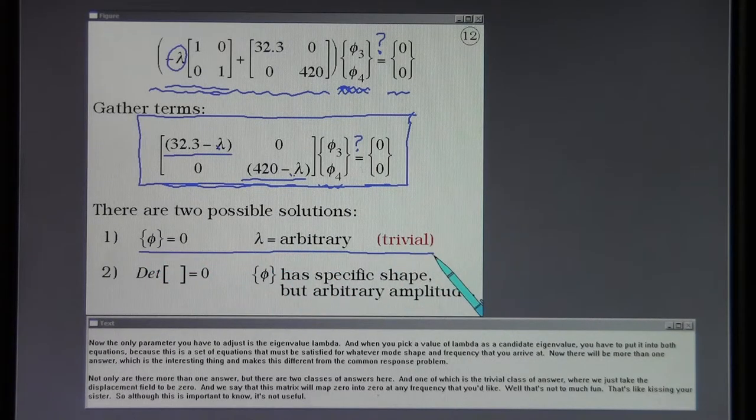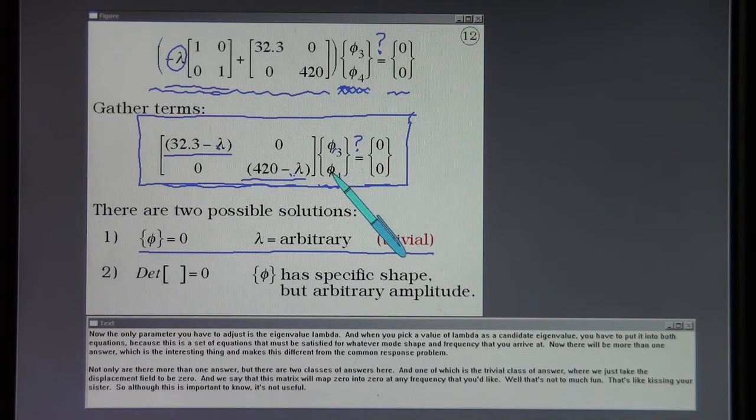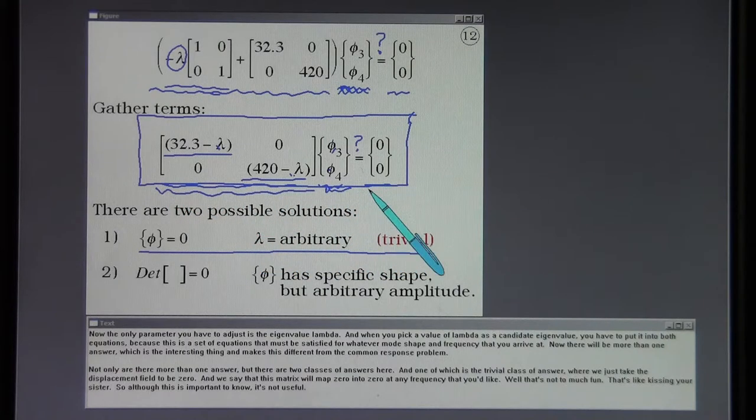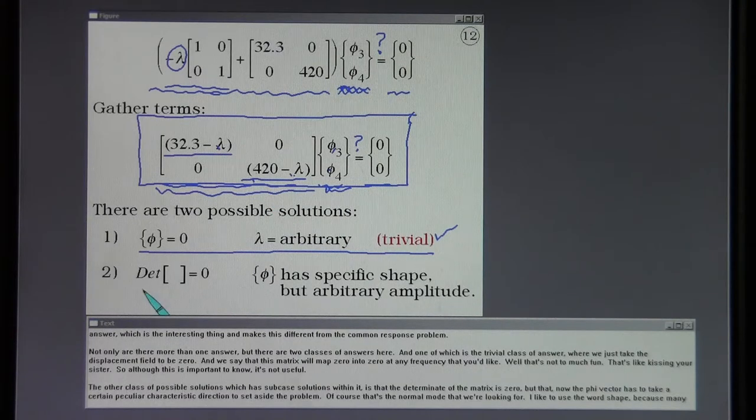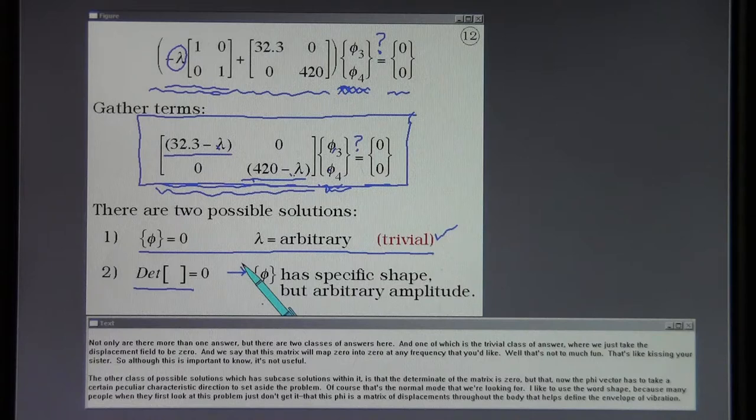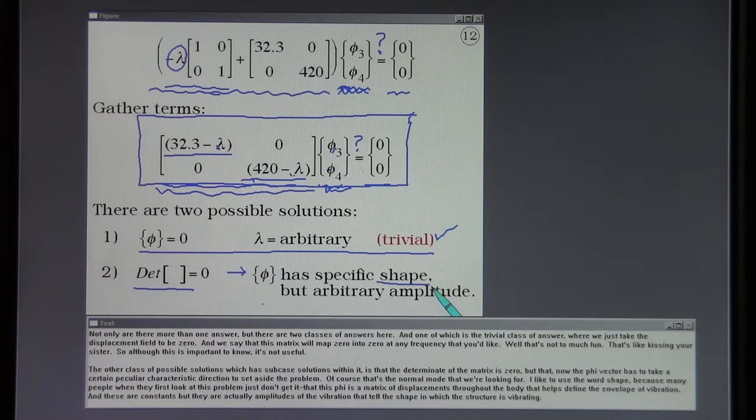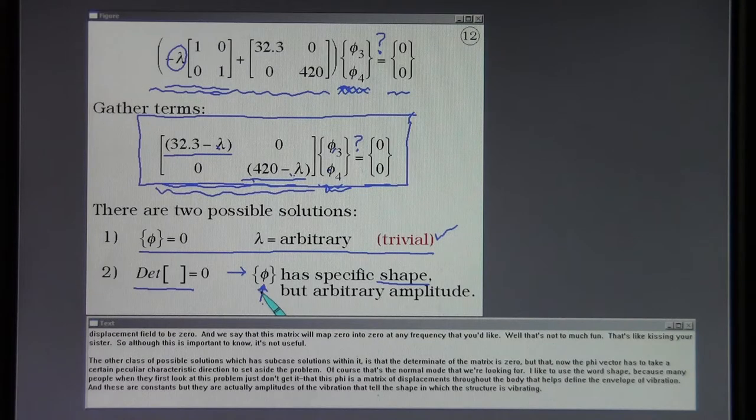The frequency content is involved in this eigenvalue. The displacement field that's proposed is here. This would correspond to the static values that define the envelope of the normal mode. The real question is whether you can bring this system into balance or not. And so we have that second form of the problem where we emphasize that there was a dynamical matrix attempting to map a proposed vector into the zero vector. Now we can put the terms together because matrix addition can be handled this way and see that on the main diagonals there are terms that have both inertia and structural stiffness properties in them. Again we're still asking is there a direction here that can be mapped into zero. Now the only parameter you have to adjust is the eigenvalue lambda. And when you pick a value of lambda as a candidate eigenvalue you have to put it into both equations. Because this is a set of equations that must be satisfied for whatever mode shape and frequency that you arrive at. Now there will be more than one answer which is the interesting thing and makes this different from the common response problem. Not only are there more than one answer but there are two classes of answers and one is the trivial class of answer where we just take the displacement field to be zero. Well that's not too much fun. The other class of possible solutions is that the determinant of the matrix is zero but that now the phi vector has to take a certain peculiar characteristic direction to satisfy the problem. And of course that's the normal mode that we're looking for.